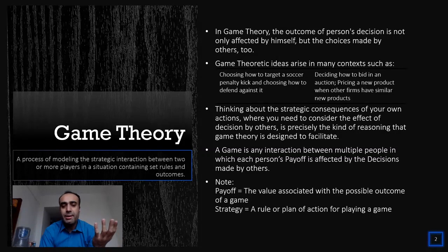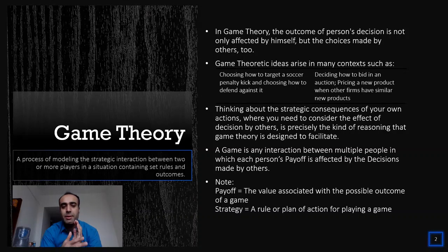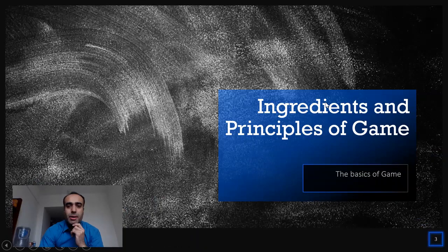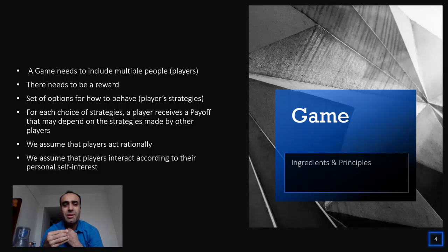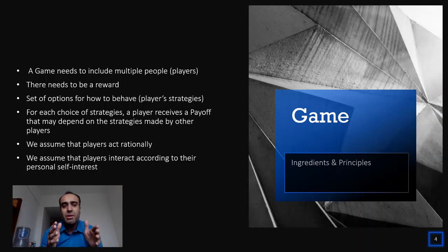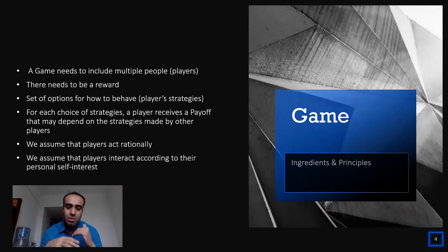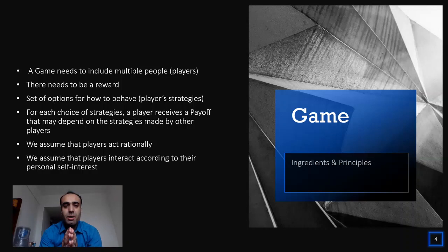A payoff is a value associated with the possible outcome of a game, and a strategy is a rule or plan of action for playing that game. These two terms will become clearer as we proceed. Now let's talk about the ingredients and principles of a game. The foremost ingredient is that a game needs to include multiple players. Players could be people, animals, objects, and so on. There also needs to be a reward, which could be a win, loss, maximum, minimum, and so on, along with a set of options for how to behave.